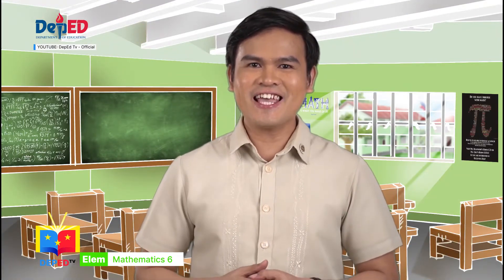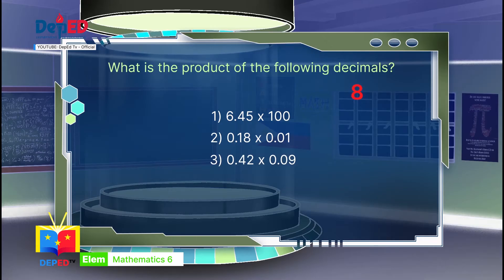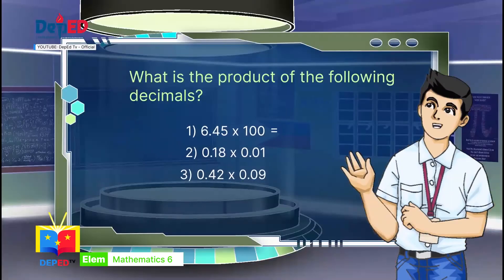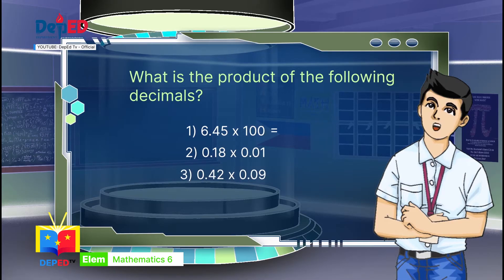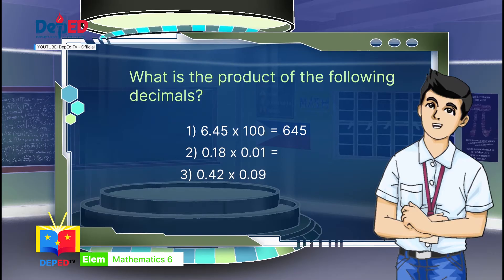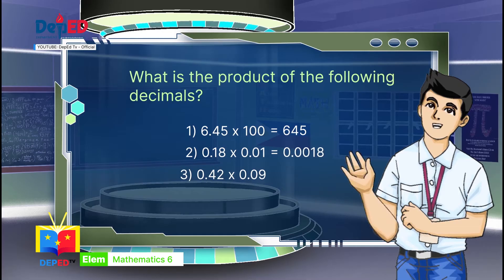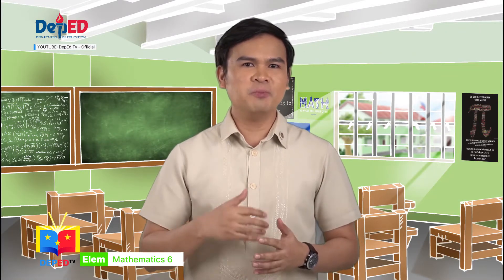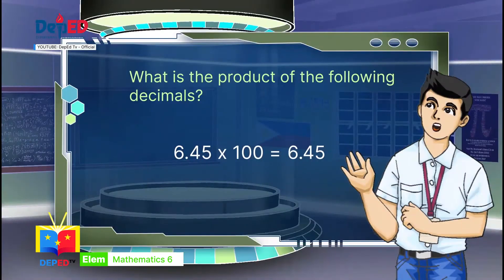Matheo and kids, you have 10 seconds. Time is up! Let's check your answers. Matheo, can you show us your answers? Here are my answers. Number 1: 6 and 45 hundredths times 100 equals 645. Number 2: 18 hundredths times 100 equals 18 ten-thousandths. Number 3: 42 hundredths times 9 hundredths equals 378 ten-thousandths. You are correct, Matheo. However, can you explain how did you arrive with your answers?